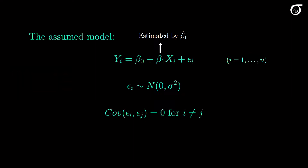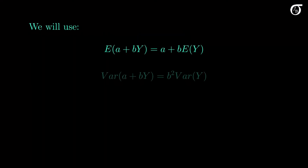I'm going to use a number of notions in the derivations, and the next slide is a non-exhaustive list. We will use the linearity of expectation, that the expectation of a plus b times y is a plus b times the expectation of y, where y is a random variable and a and b are constants. We will also use the notion that the expectation of a sum is the sum of the expectations. And we need to know that the variance of a plus b times y is b squared times the variance of y. Note that the additive constant does not affect the variance.